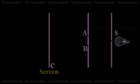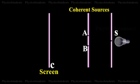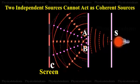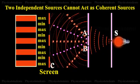For interference of light, coherent sources are essential. Two independent sources cannot act as coherent sources.